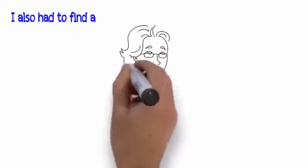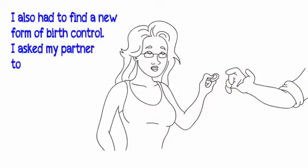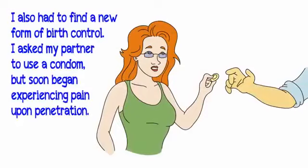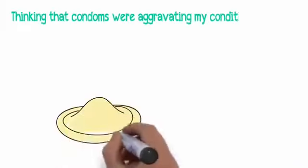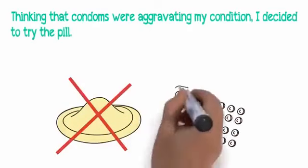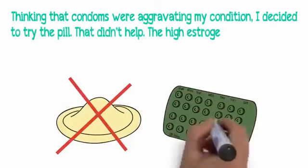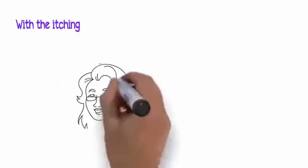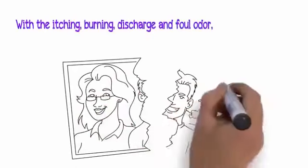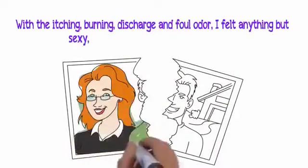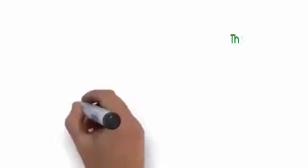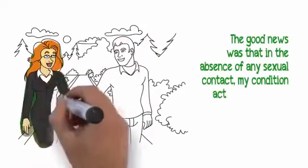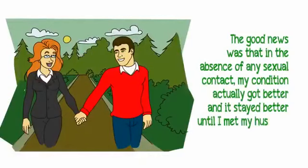I also had to find a new form of birth control. I asked my partner to use a condom, but soon began experiencing pain upon penetration. Thinking that condoms were aggravating my condition, I decided to try the pill. That didn't help. The high estrogen levels only worsened my BV symptoms. With the itching, burning, discharge, and foul odor, I felt anything but sexy, and soon my partner and I parted ways. In the absence of any sexual contact, my condition actually got better.